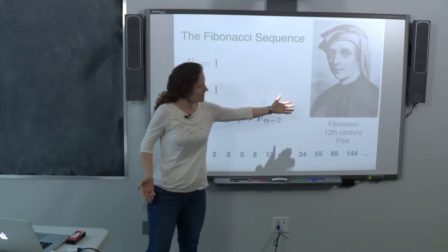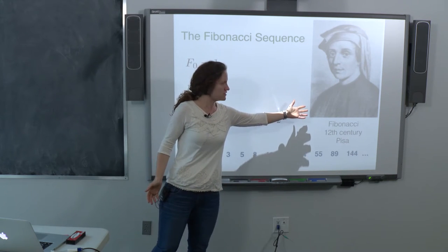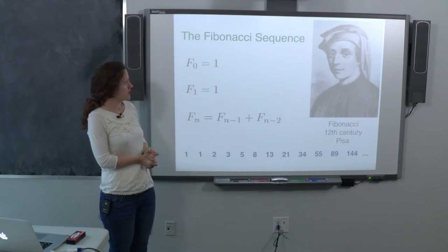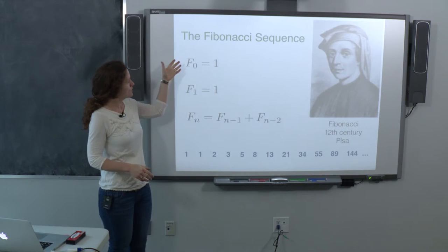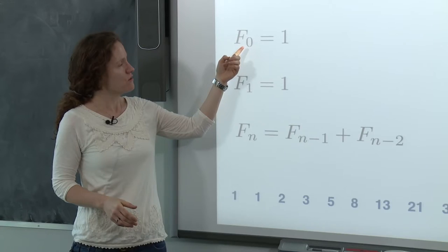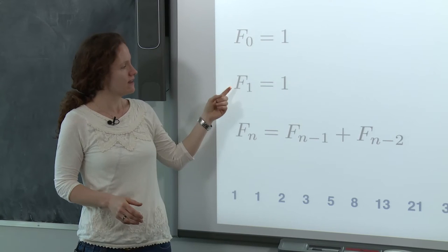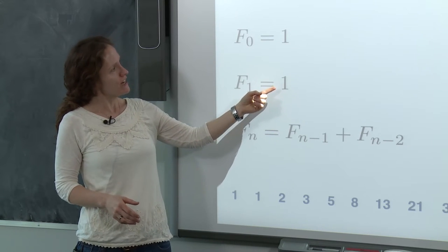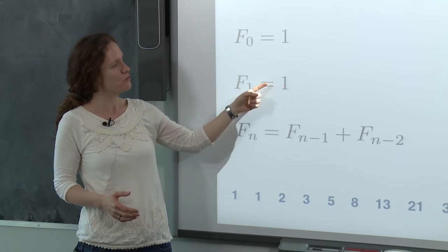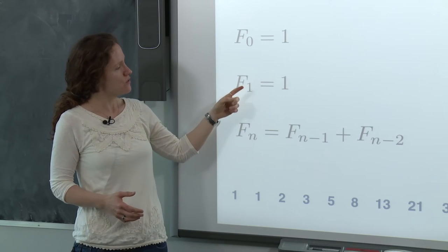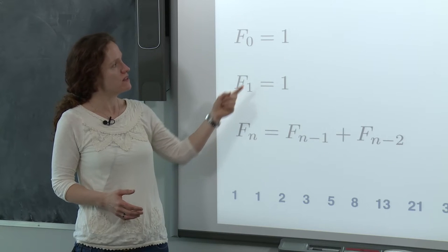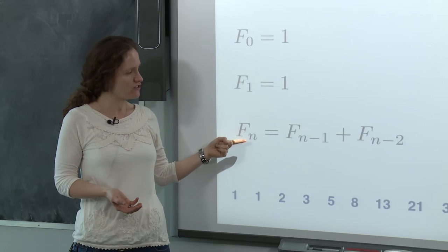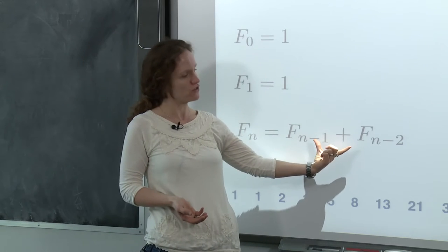Fibonacci, an Italian mathematician from the 12th century, was the first to write down the Fibonacci sequence. The sequence starts with two numbers: F₀, the very first entry, is 1, and F₁ is also 1. We generate the next number by adding the two previous ones together. In general, the nth Fibonacci number is just the sum of the previous two in the list.